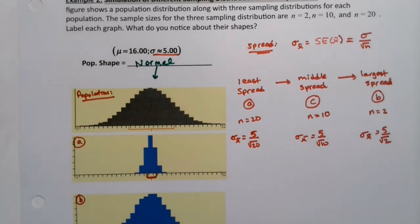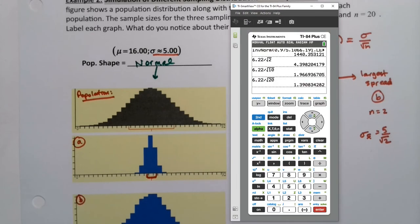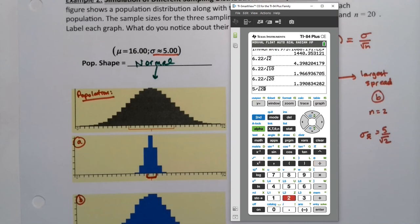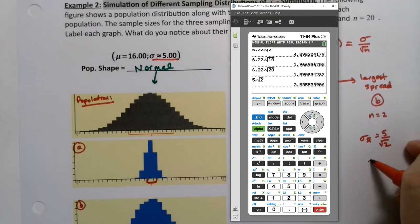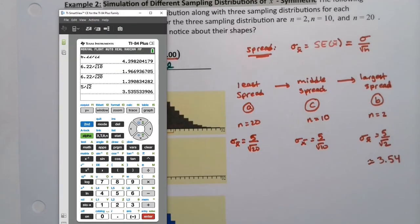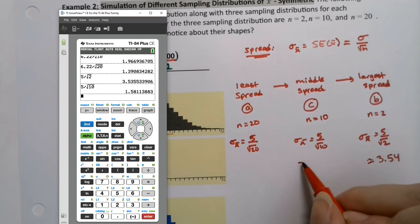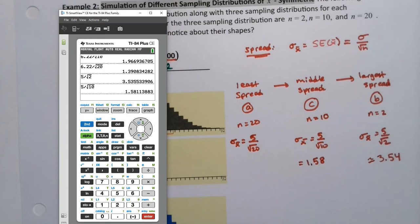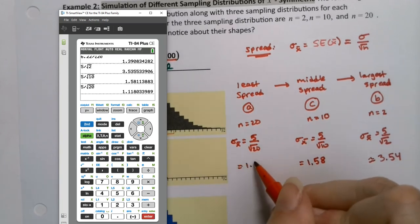How small? Well, I could grab a calculator and find that out. So if I say 5 divide square root 2, that's 3.55, right? So this one right here would be 3.54. And then if I take 5 divide square root of 10, this would be 1.58. And if I say 5 divided by the square root of 20, this is 1.12.